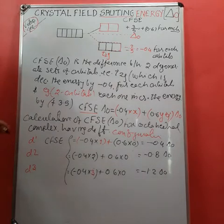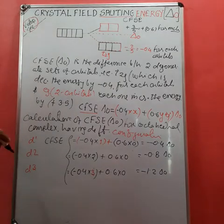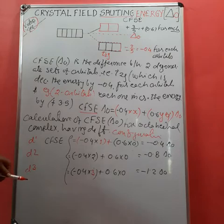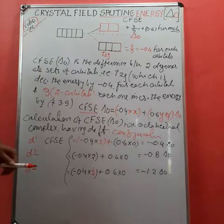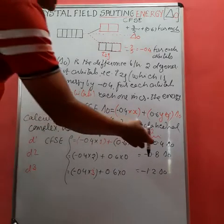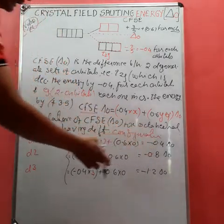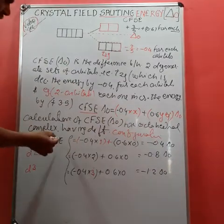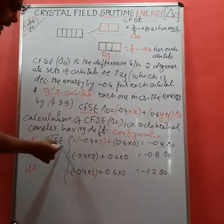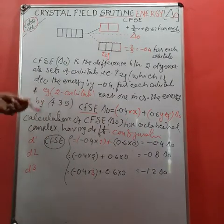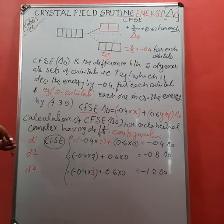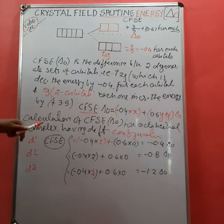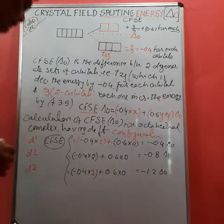This means that for d1, d2, and d3 configurations, irrespective of the type of ligand, the CFSE energy remains the same — there is no change based on ligand field strength.